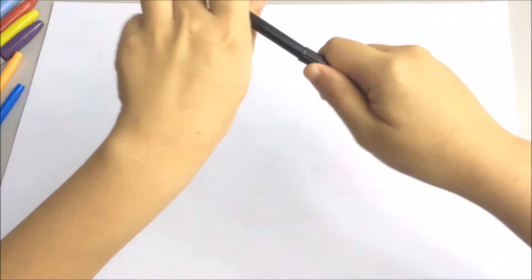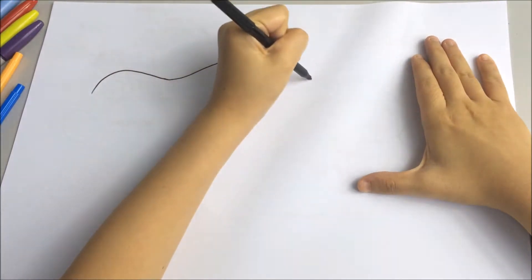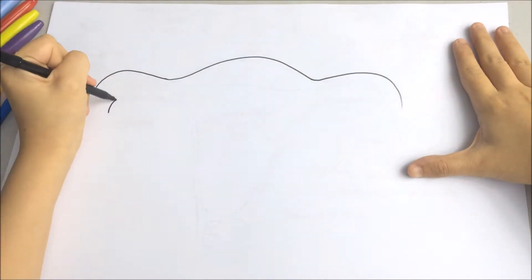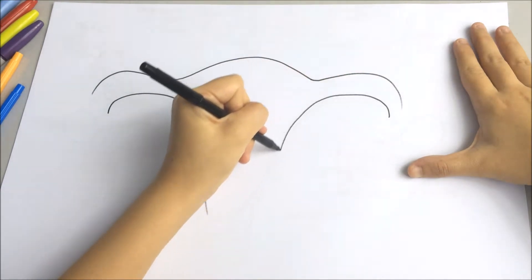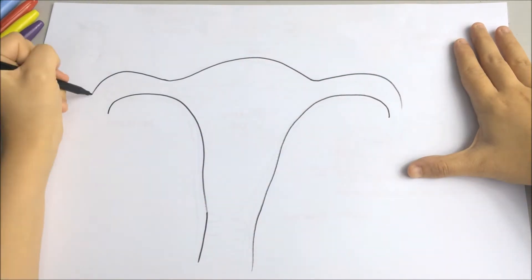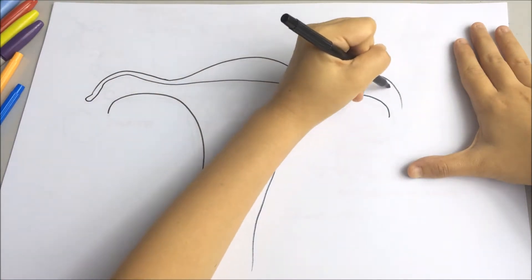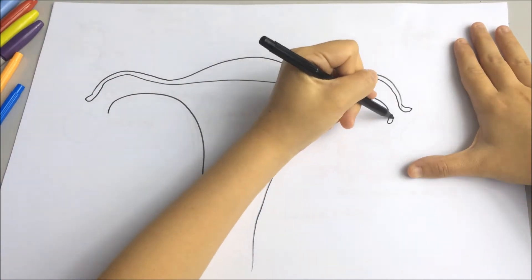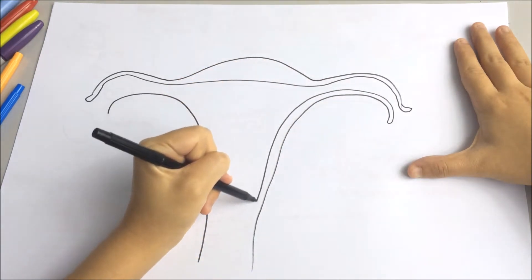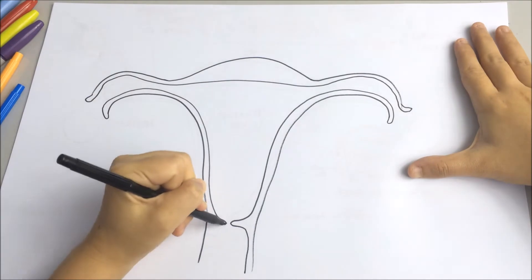Hi guys, welcome to today's video. We'll be talking about reproduction — human reproduction — mainly focusing on fertilization and early development of the zygote, as well as the formation of the placenta. This is the uterus.